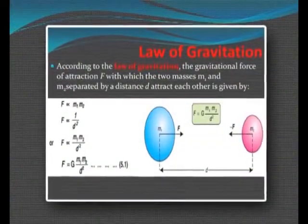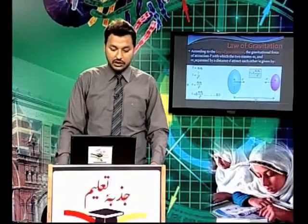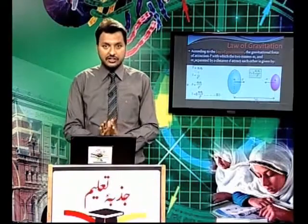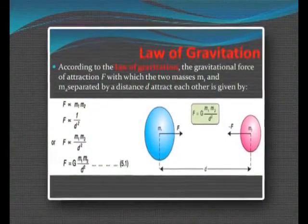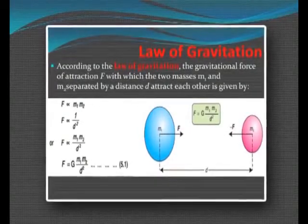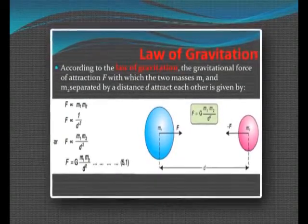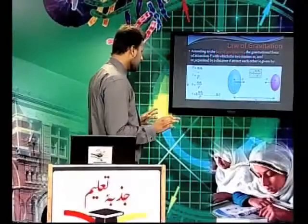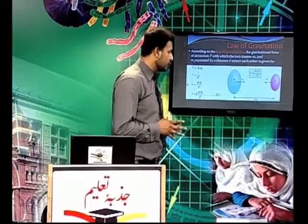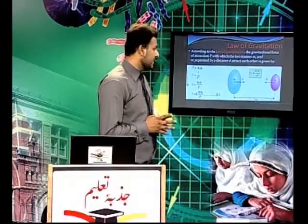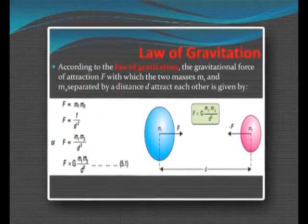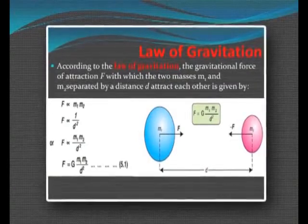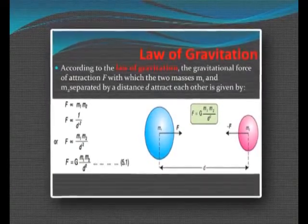According to the law of gravitation, हम इसका formula derive करेंगे. सबसे पहले diagram में देखें, students — आपको TV screens पर नजर आ रही होंगी. इस diagram में हमारे पास दो masses हैं, M1 and M2. M1 blue color का है और M2 pink color में है. ये दो masses M1 और M2 को separate किया गया है by the distance D. इन दोनों के दर्मियान जो फासला है, जो distance है, वो D है. M1 force लगा रहा है M2 पर.